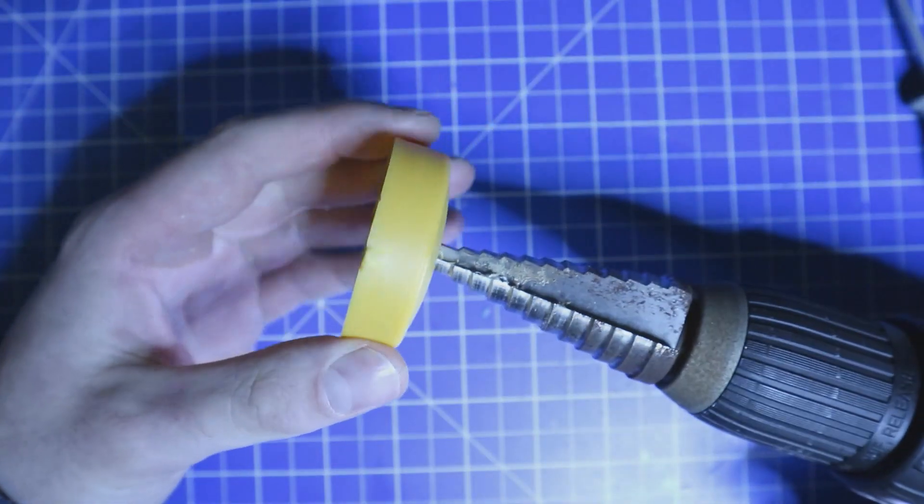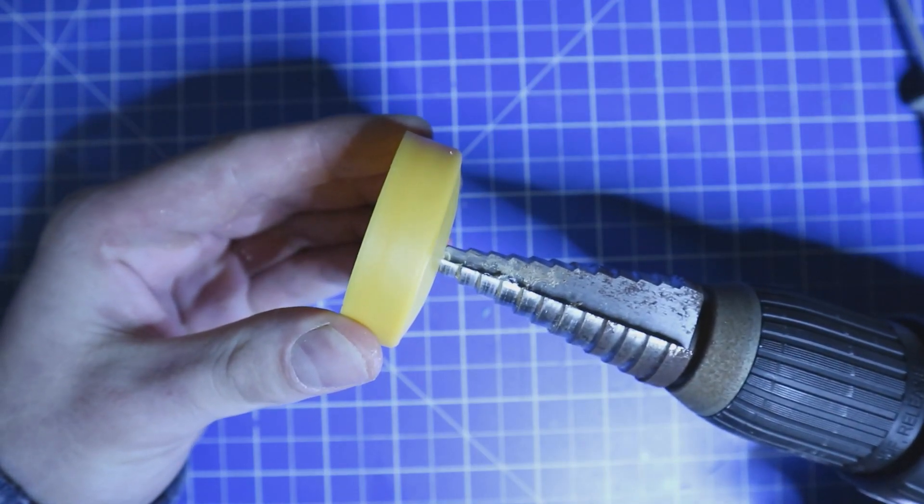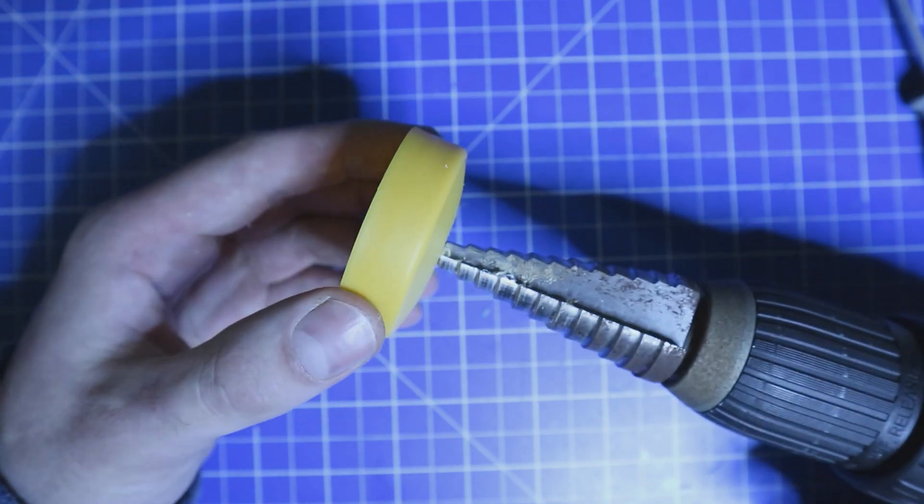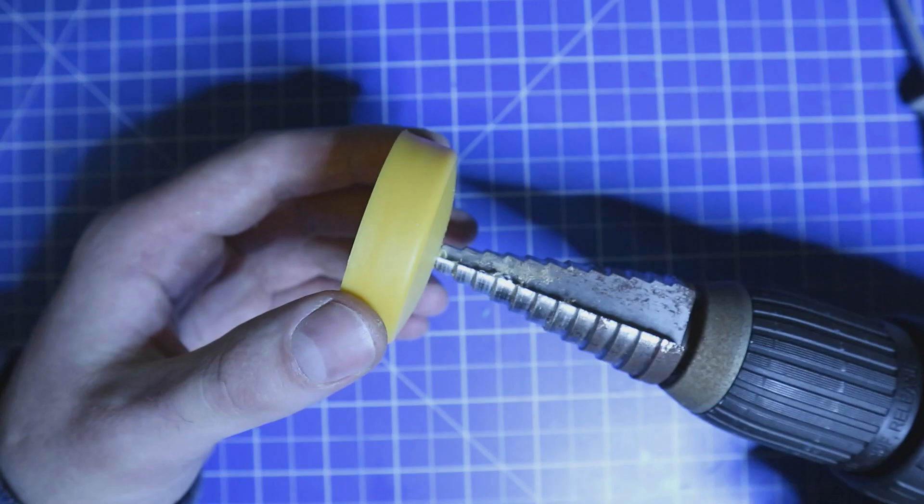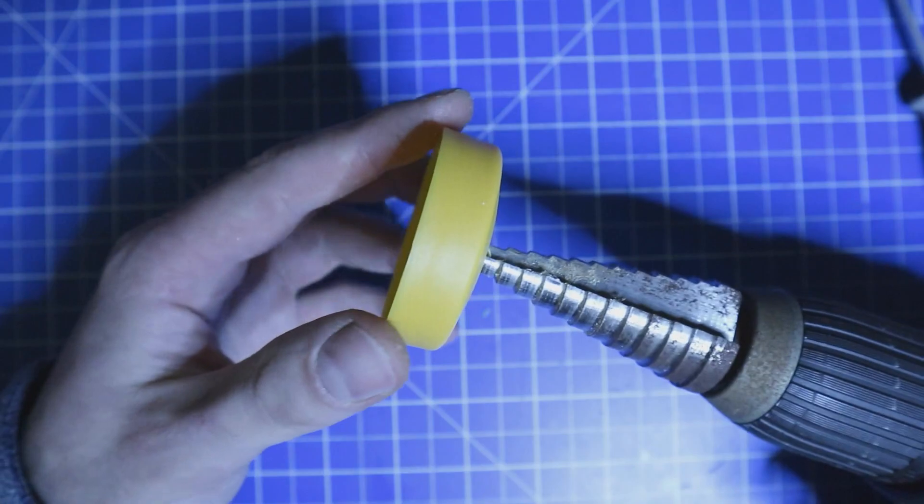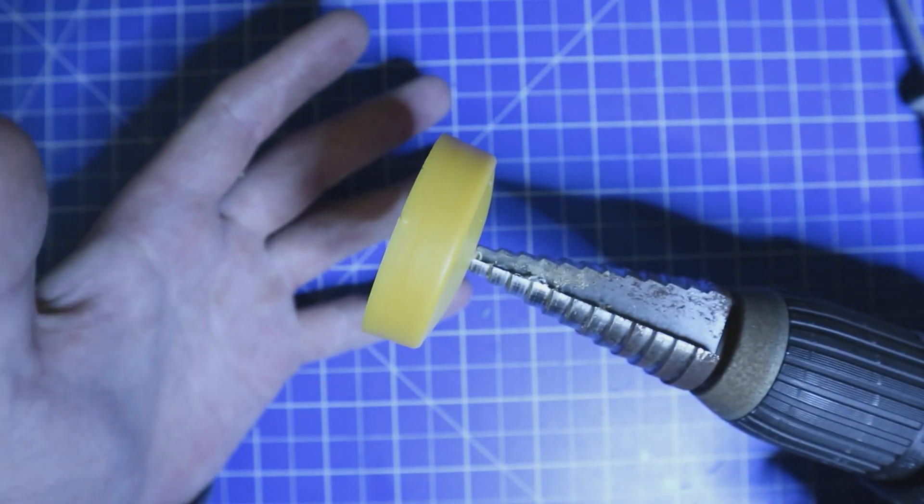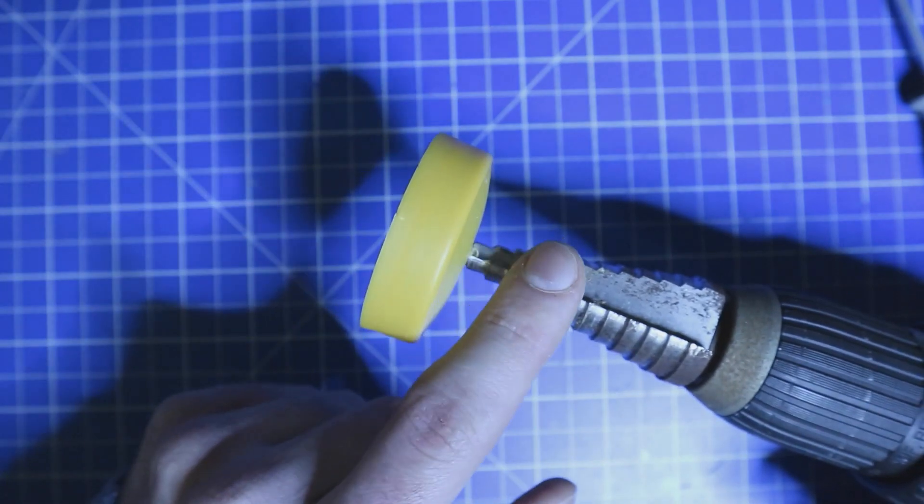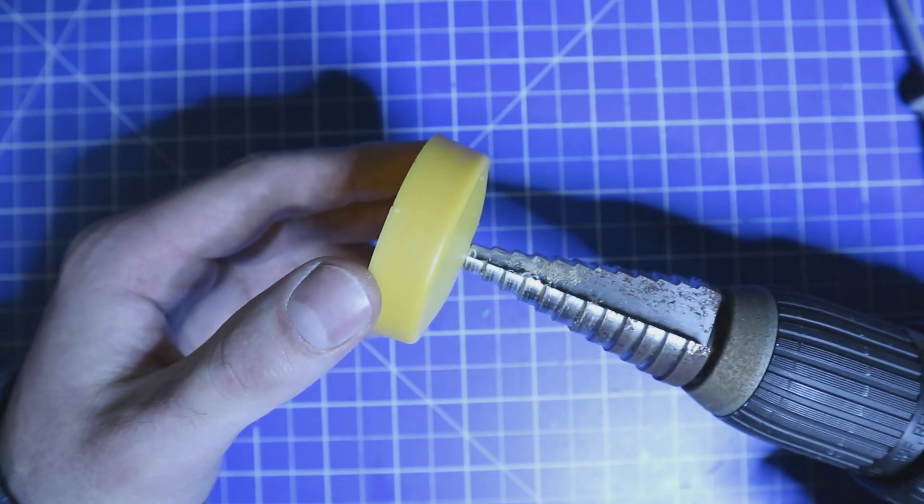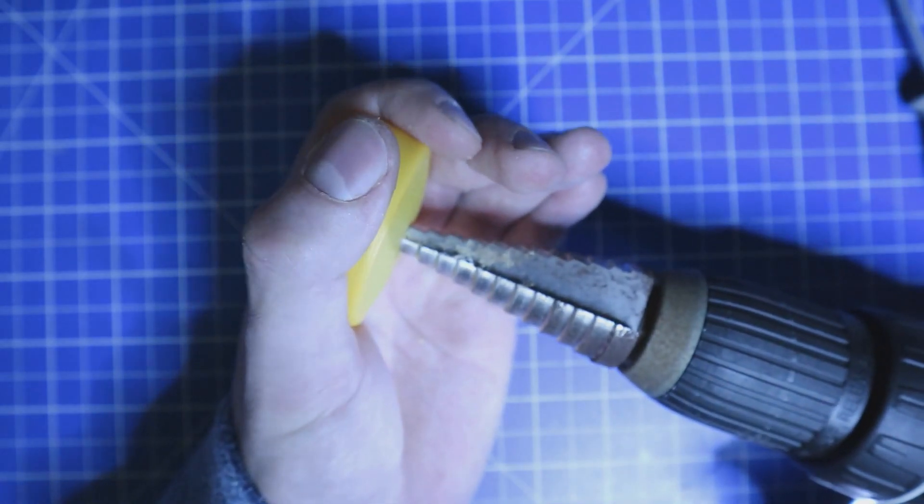When you drill a hole like this I recommend you fixate the lid in a vise or something that you don't hurt or damage your hand. Don't use gloves for this work because the step drill can easily catch on the glove and then it's going to hurt. I'm a professional so I know what I'm doing here.